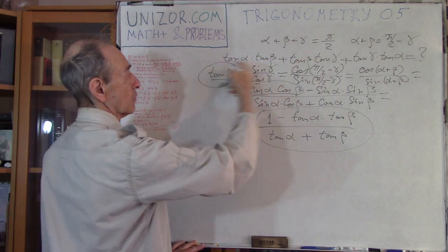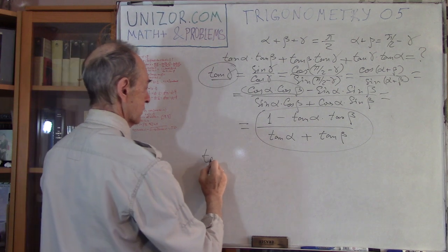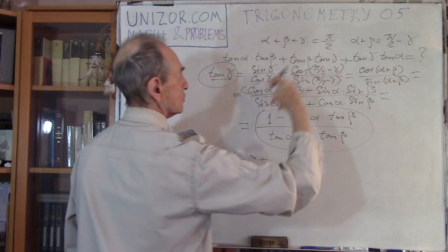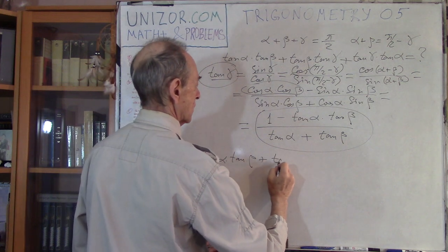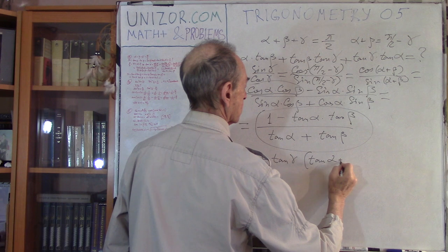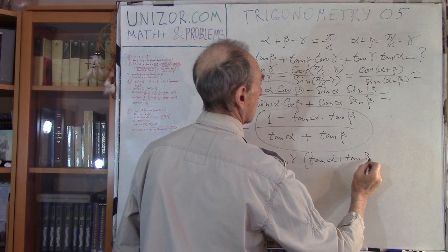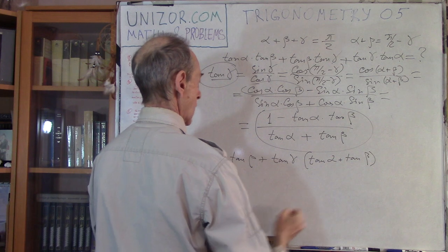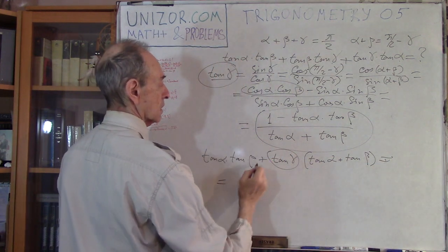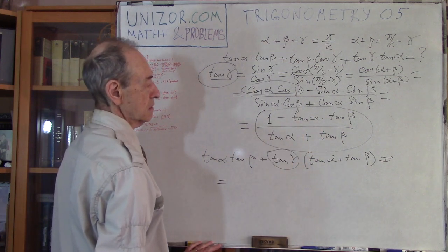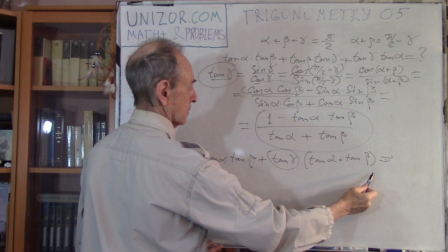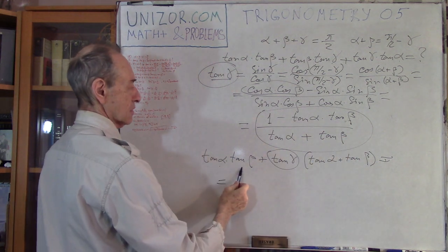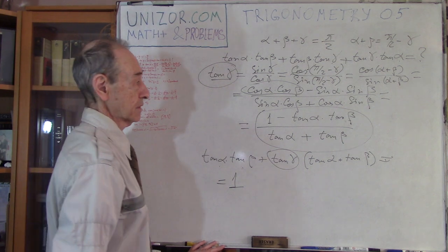All I have to do is substitute it into my original expression. Tangent alpha times tangent beta plus — now I factor out tangent gamma — it will be tangent gamma times (tangent alpha plus tangent beta). I substitute the expression for tangent gamma; the tangent alpha plus tangent beta will cancel with this, and what remains is one minus tangent alpha times tangent beta, plus tangent alpha times tangent beta. So it will be one.